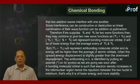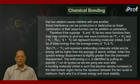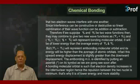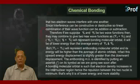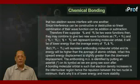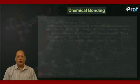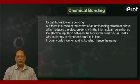A bonding molecular orbital is such that electron density increases in the inter-nuclear region. Hence, the repulsion between the two nuclei is minimum. That's why it's of lower energy and more stability. It contributes towards bonding.